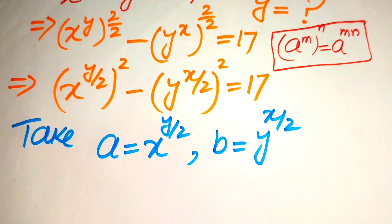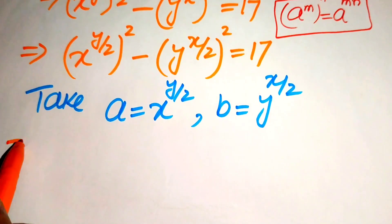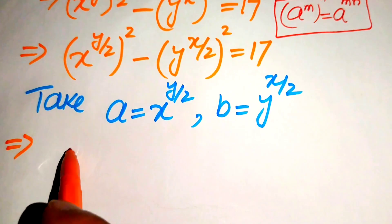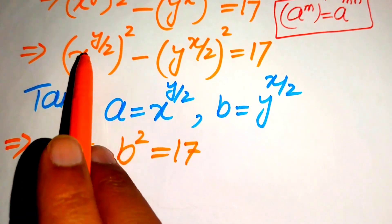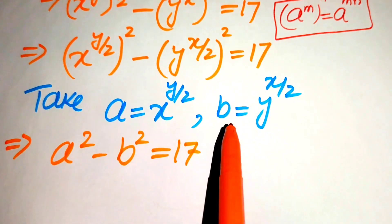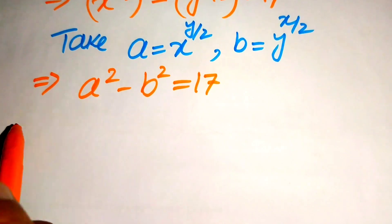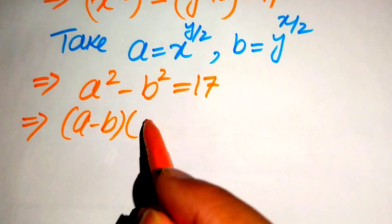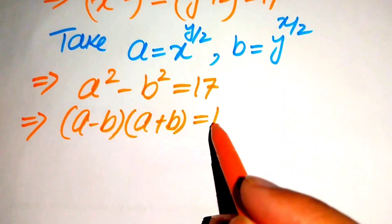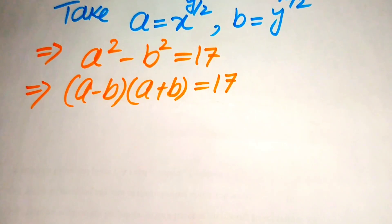We substitute these two values into the above equation so that it becomes a squared minus b squared equals to 17. Now we use the algebraic formula: a squared minus b squared equals a minus b times a plus b, equals to 17. We focus on the left hand side and see we have two factors multiplied by each other.